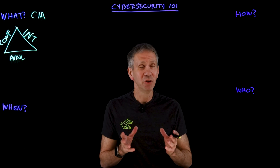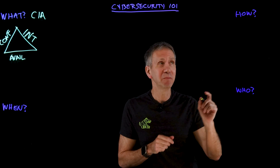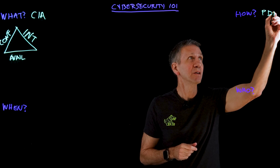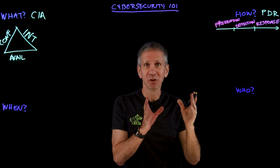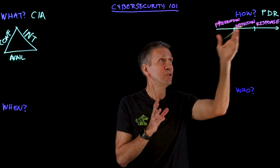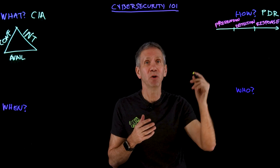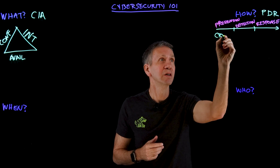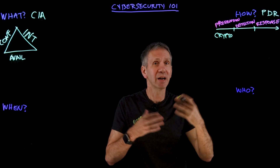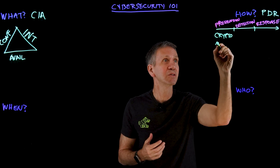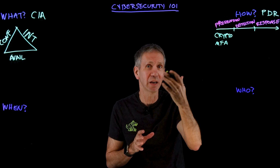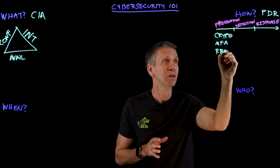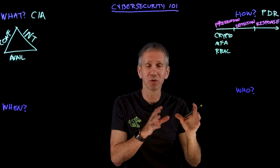So now we know what we need to do. How are we going to go about doing it? The acronym to remember here is PDR: Prevention, Detection, and Response. Everything we do in cybersecurity to achieve the CIA, we do through these methods. For prevention, cryptography can make something so that not everyone can see it. Multi-factor authentication lets us verify it's really you before granting access. Roles-based access control provides fine-grained control over what you're allowed to do.